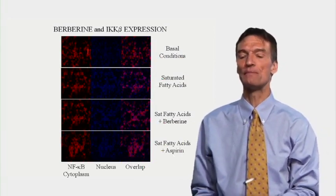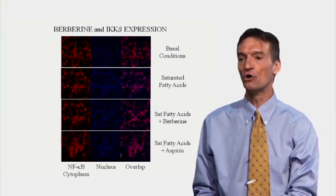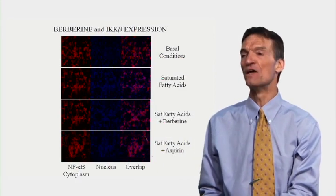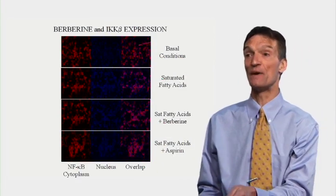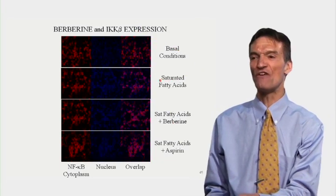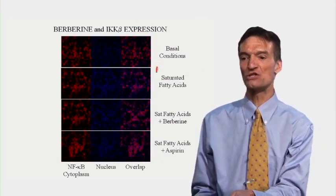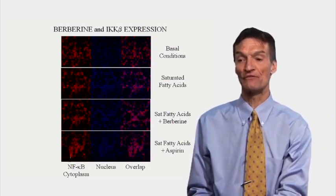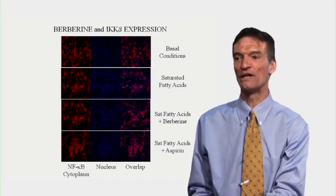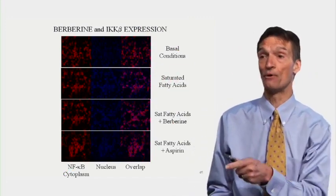Looking at nuclear factor kappa-beta in the cytoplasm: we stain for the nucleus and look for overlap. There's not much translocation under basal conditions. With saturated fatty acids, there's more translocation because we're moving nuclear factor kappa-beta from the cytoplasm to the nucleus. This is blunted by aspirin or berberine.